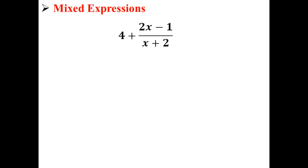Here we have an example of a mixed expression, 4 plus 2x minus 1 over x plus 2. This expression is made up of a monomial, 4, and the rational expression, 2x minus 1 over x plus 2.